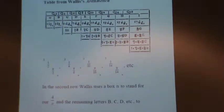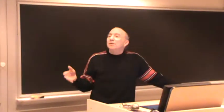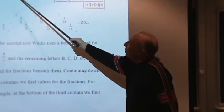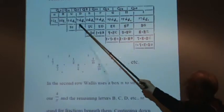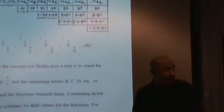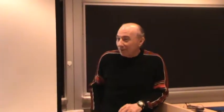A hundred years later, Euler wrote a paper entitled On the Continued Fractions of Wallace. And Euler managed to find another way of finding all these continued fractions.